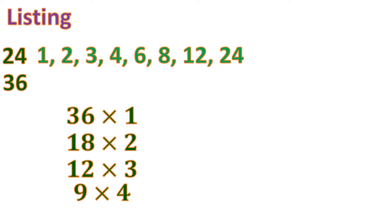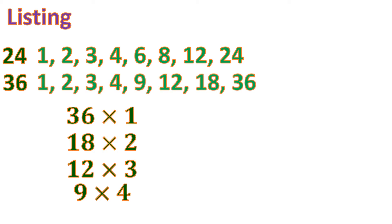Now let's write the list of factors of 36 based on the pairs: 1, 2, 3, 4, 9, 12, 18, and 36. Those are the factors of 36.